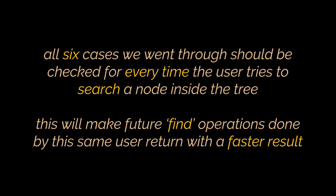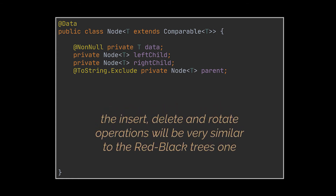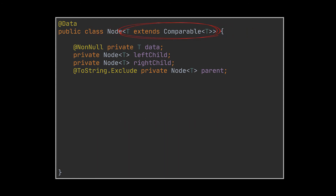Now let's implement the splay tree class together. Starting with the node class — this class will store the data needed, in addition to references to the left child, right child, and the parent of the node. The splay tree node class mostly resembles the red-black tree node class, minus the color attribute. Because of that, the insert, delete, and rotation operations will have similar implementations to the red-black trees video. We generified this class and annotated it with Lombok annotations to eliminate boilerplate code.